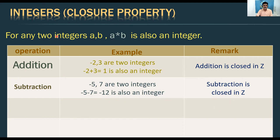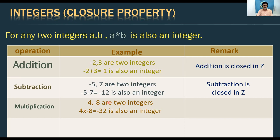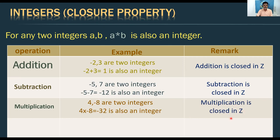Third operation, multiplication in integers: take 4 and −8. 4 × (−8) = −32, and −32 is also an integer. So multiplication is closed in Z. For integers, addition, subtraction, and multiplication all satisfy closure property.